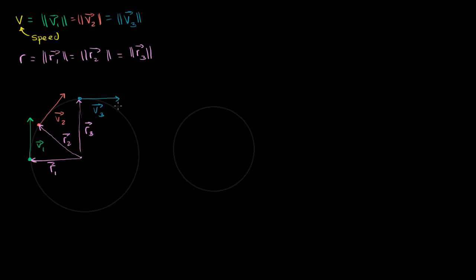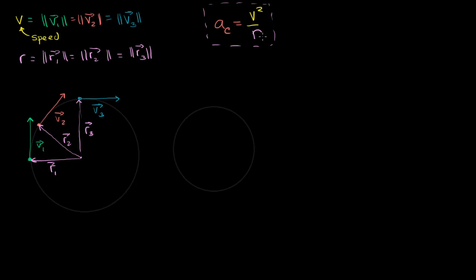What I want to do in this video is prove to you visually that given this radius and given this speed, the magnitude of the centripetal acceleration — I'll write that as a sub c, a scalar quantity — is going to be equal to our speed squared divided by the radius of the circle. This is what I want you to feel good about by the end of this video.